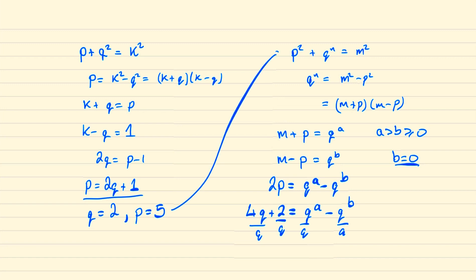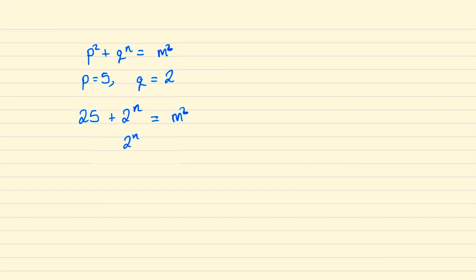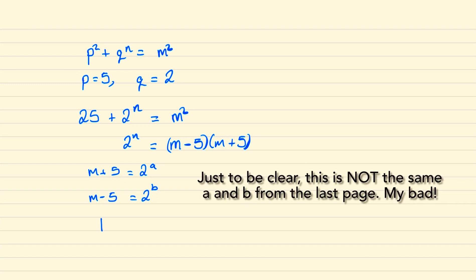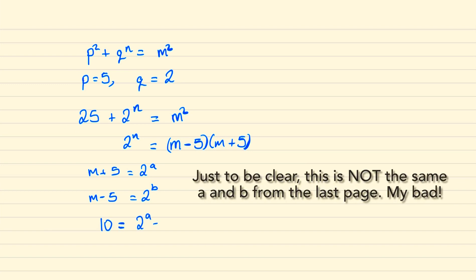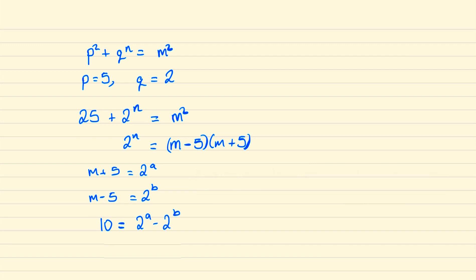Next we put q = 2 and p = 5 back into our equation. Writing 2ⁿ as the difference of two squares, factorised as (m - 5)(m + 5), it follows that m + 5 and m - 5 must both be powers of 2. Subtracting these two equations gives that 10 is the difference of two powers of 2. Since 5 is a factor of 10, we need 5 to also be a factor of 2ᵃ - 2ᵇ, but the difference of two powers of 2 is always even. If b = 0 then 2ᵃ = 11, which is nonsense, so no solution exists.